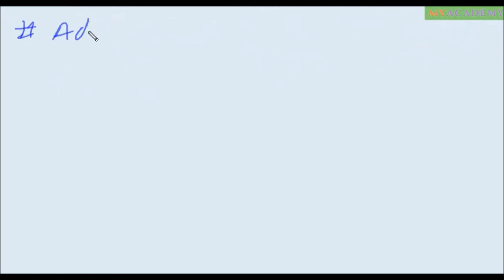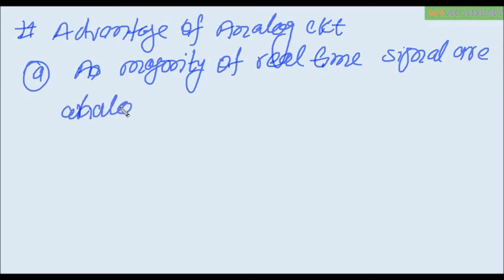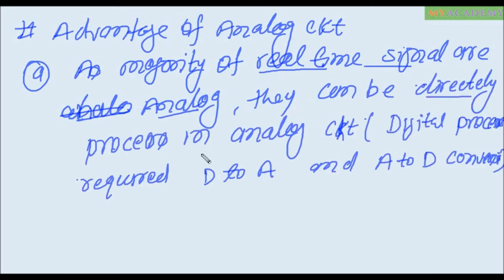Next point is advantage of analog circuit. Advantage number one: as majority of real-time signal are analog, they directly process in analog circuit. Means majority of real-time signal real-time signal is analog and they can directly process in analog circuit.